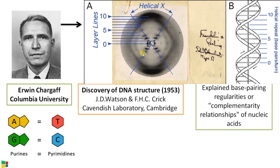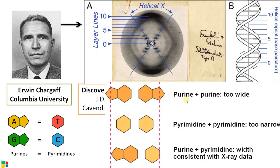The next question was how to arrange the bases inside this DNA. At the beginning, Watson thought about a like-with-like arrangement — that is, adenine pairs with adenine and guanine pairs with guanine. They found out that if purine and purine are together, the DNA strand will be too wide, whereas pyrimidine and pyrimidine placed together, being single-ringed, would be too narrow. When they put together a purine and a pyrimidine, the width was consistent with the X-ray crystallographic data published by Rosalind Franklin.